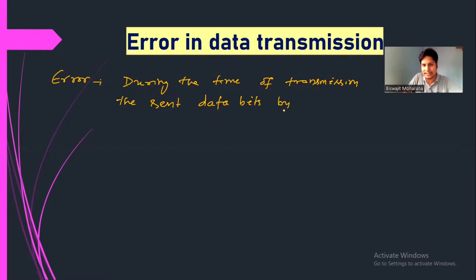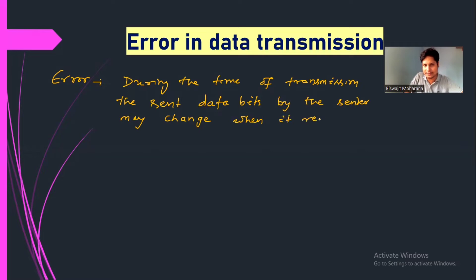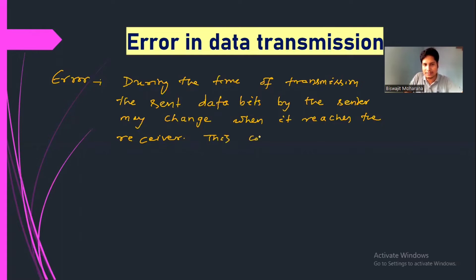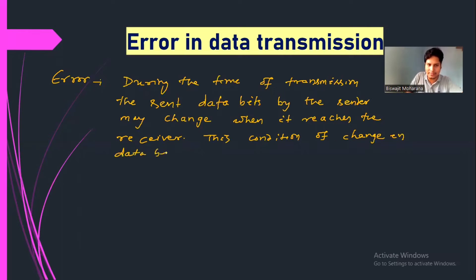the sent data bits by the sender may change when it reaches the receiver or destination. This condition of change in data bits is known as an error.